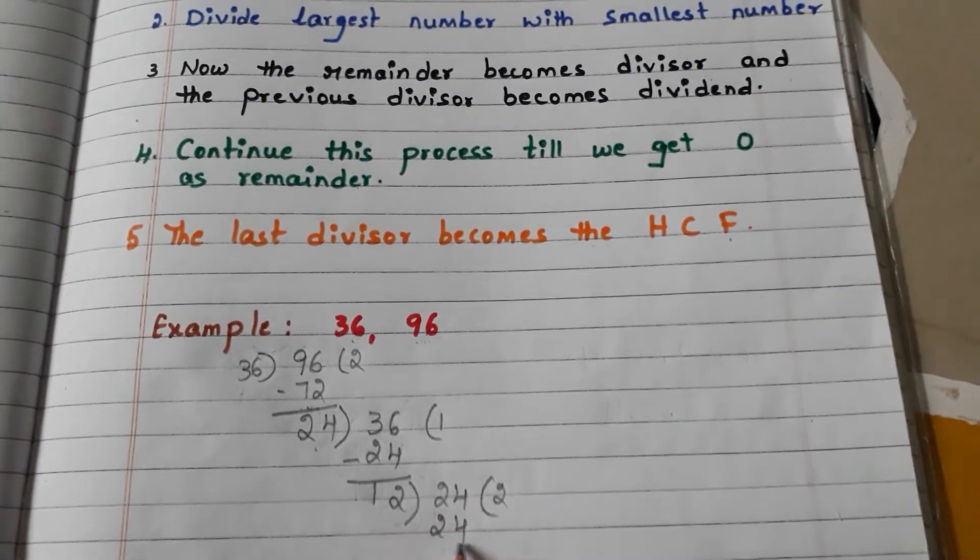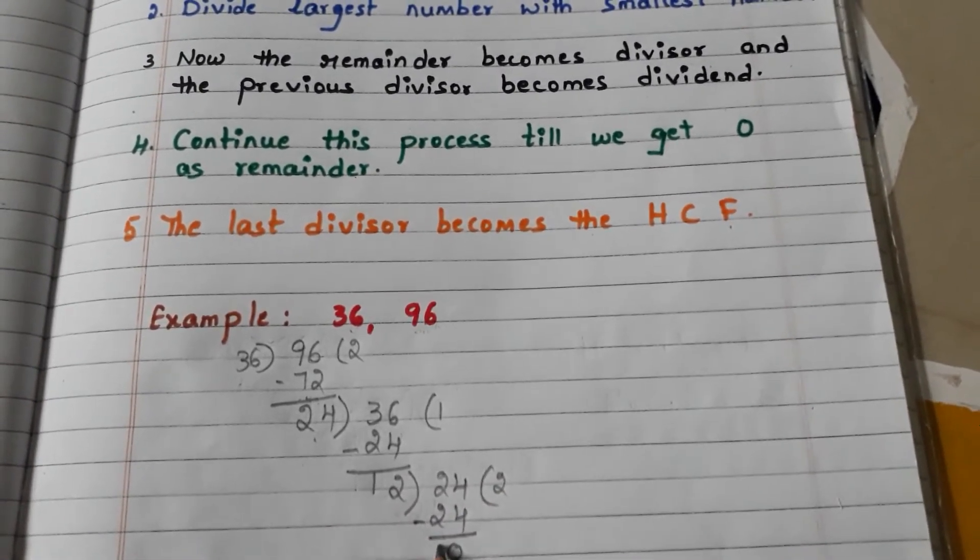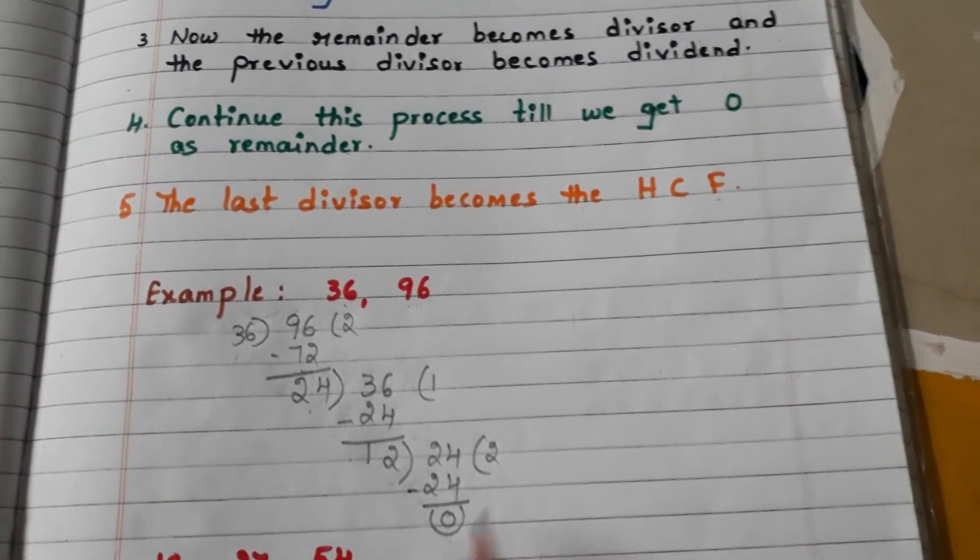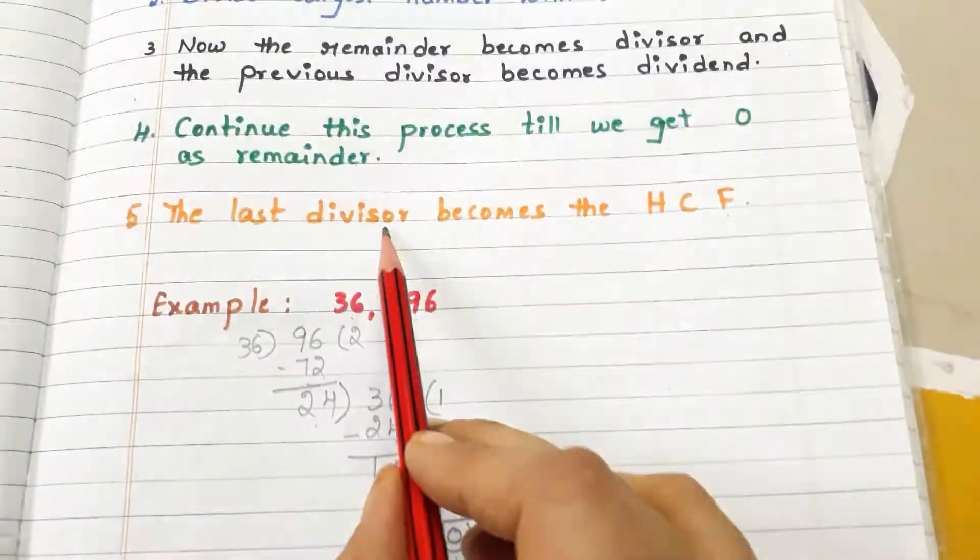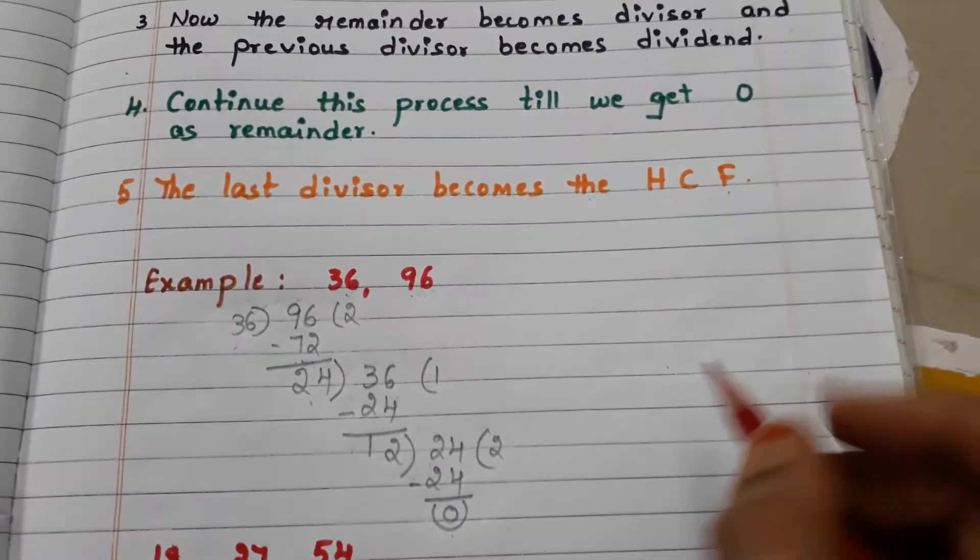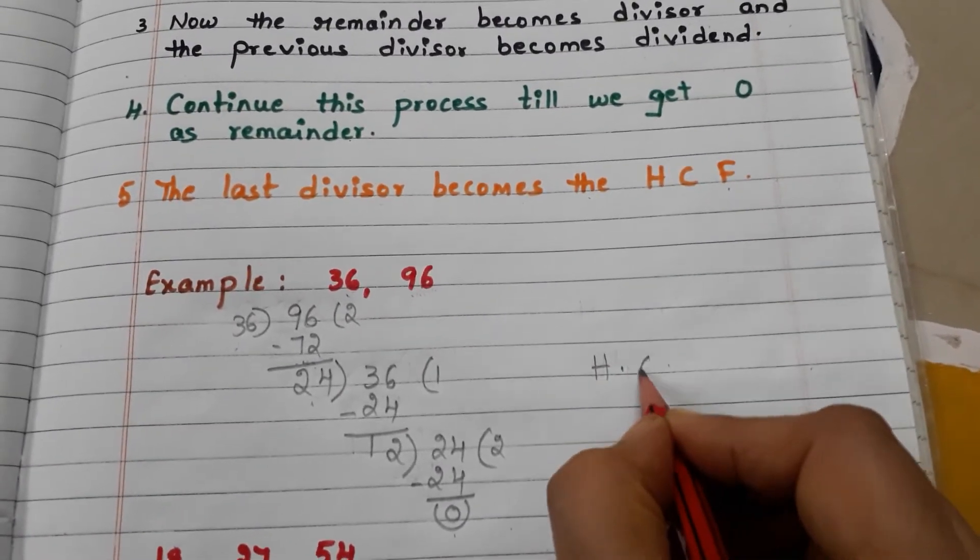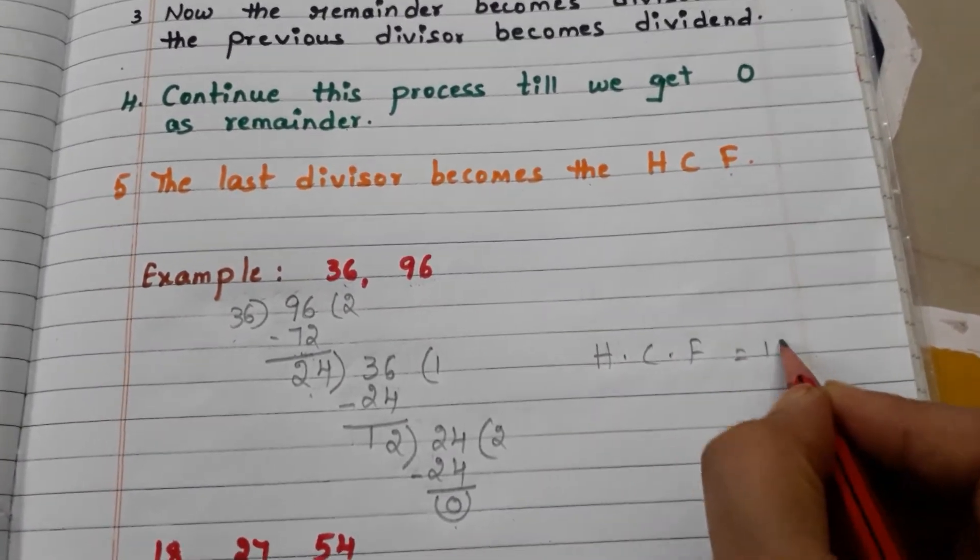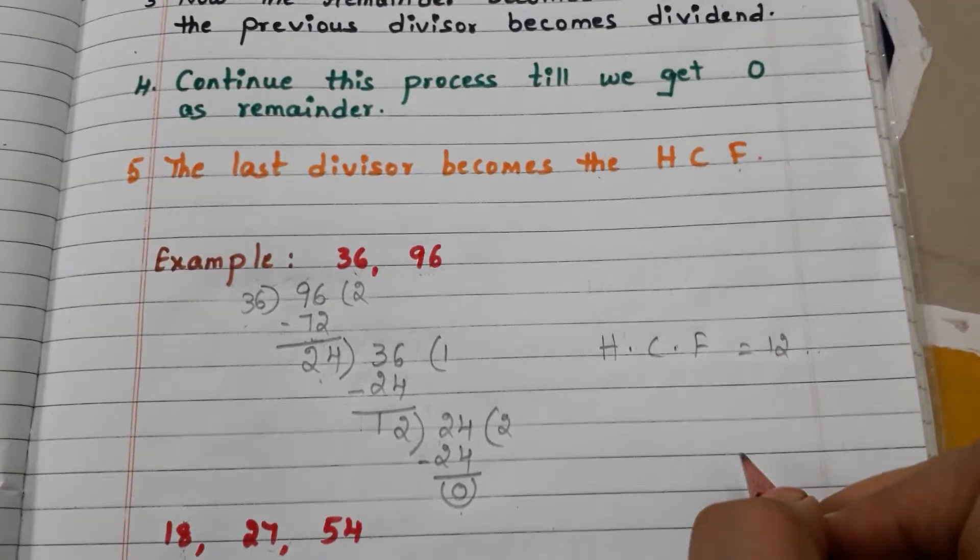Finally we got the remainder 0. Go to step 5: the last divisor becomes the HCF. Now HCF equals how much? 12. Okay, in this way we have to find the HCF.